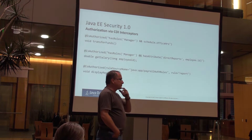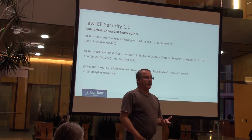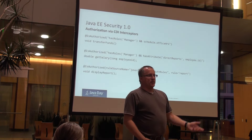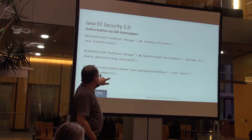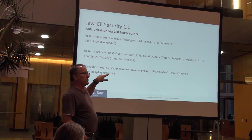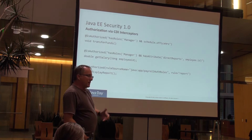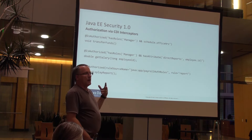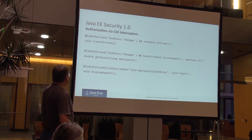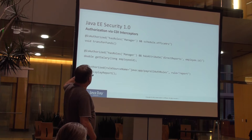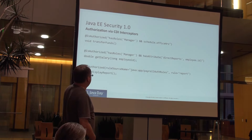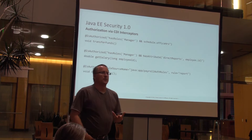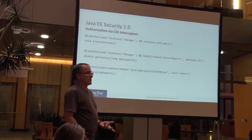And we're going to enhance it. Before, it was fairly fixed — if you're in this role, you can execute this method. Now we're using the expression language, where you can use an expression to define that constraint. For example, you're authorized to invoke this method if you're in the role of manager and you're in the scheduled office operation. It's actually pretty flexible.